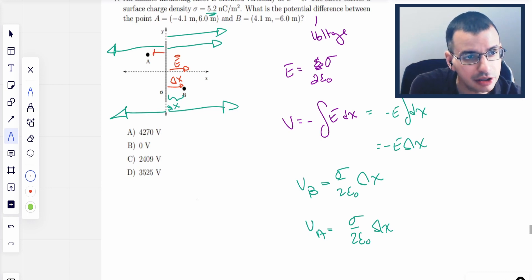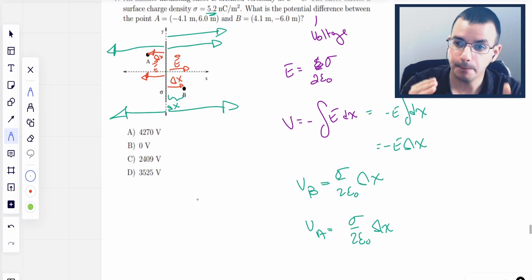For A, delta x is going to be this way. E is going to be this way. And therefore, it's going to be positive again because you have a negative times a negative, both the same direction.